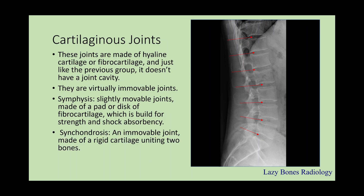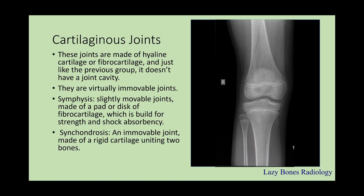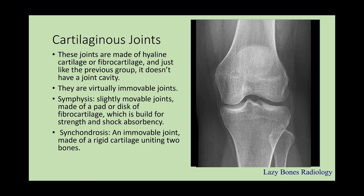Next are the synchondrosis joints, which are immovable joints made of rigid cartilage uniting two bones. As you can see here, this is a synchondrosis joint that has not fully calcified, also known as the growth plate. When it fully matures and calcifies, the growth plate disappears and becomes a line.